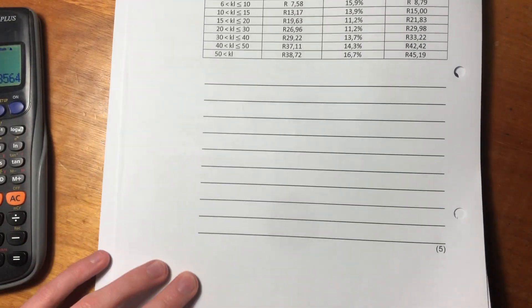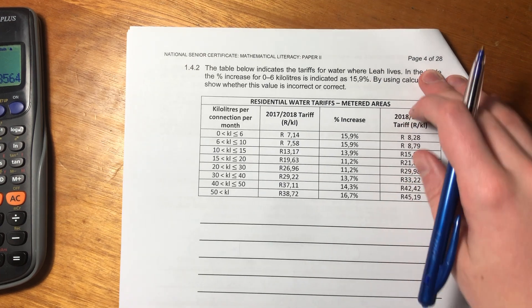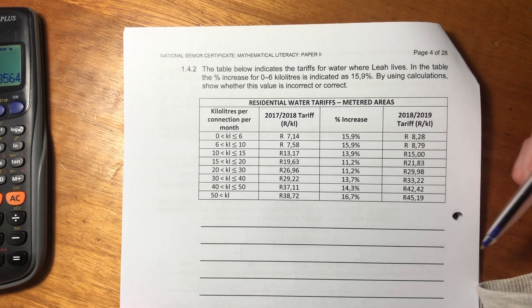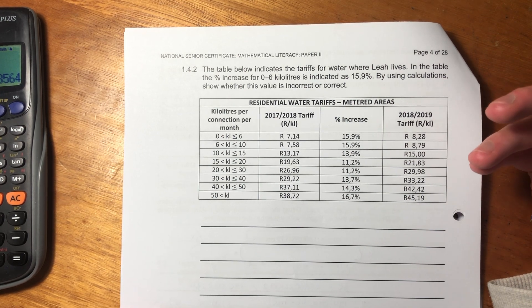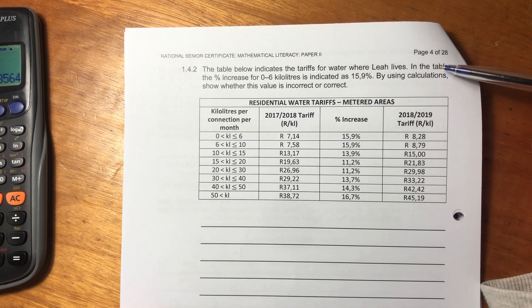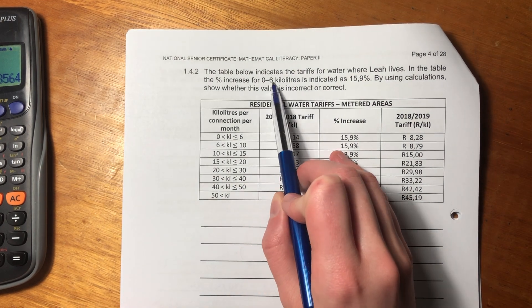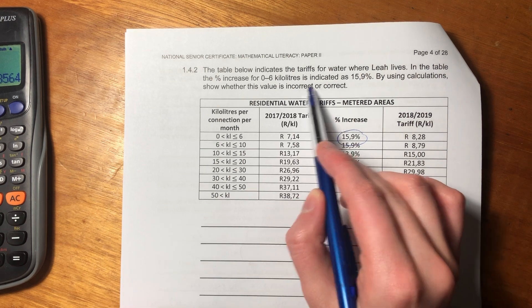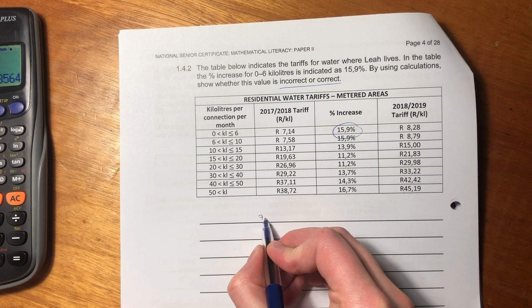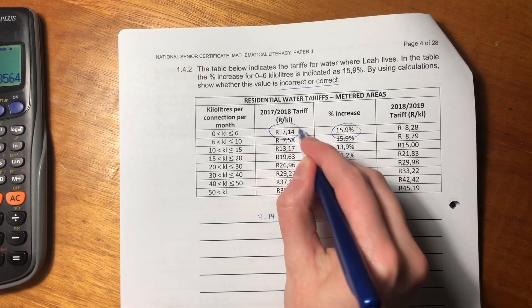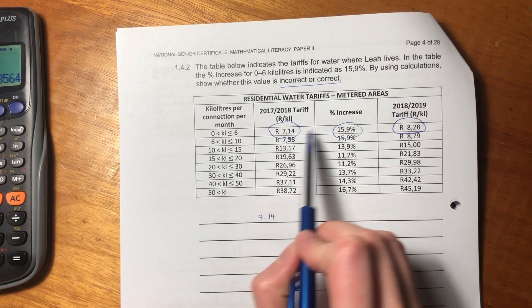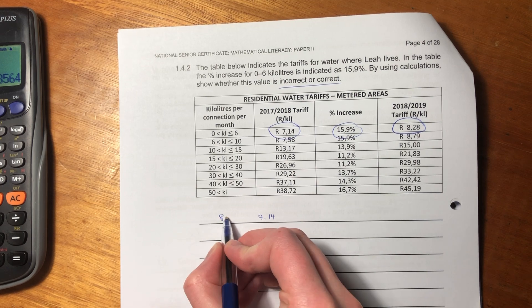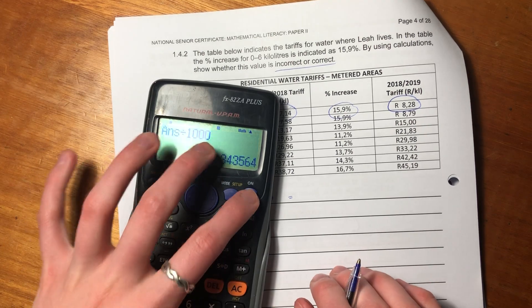Let's now move on to this next question. The table below indicates the tariff for water where Leah lives. When you wash your clothes, you have to use water. She's figured out how much water she has to use, so now she wants to figure out how expensive it is. In the table, the percentage increase for zero to six kiloliters is indicated as 15.9%. By using calculations, show whether the value is incorrect or correct. We know that it's gone from this price to this price, two different years. This is what it was in the first year for this interval, and it's increased.